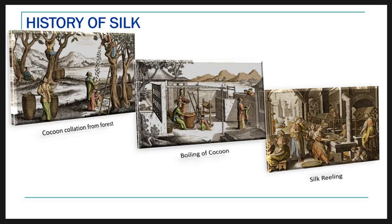When we study sericulture, its history is also important. In ancient times, cocoons were collected directly from the forest because rearing equipment and techniques were not well evolved. The collected cocoons were then sorted grade-wise; waste cocoons were destroyed. The best quality cocoons were boiled in hot water, which helped to separate the silk thread. After separation, the silk thread was collected uniformly. This technique was called the rearing of silk.